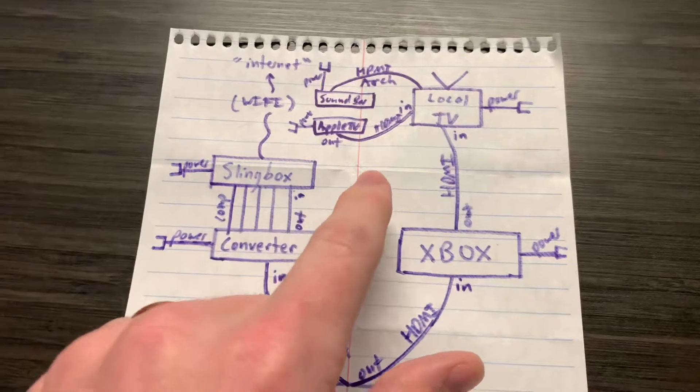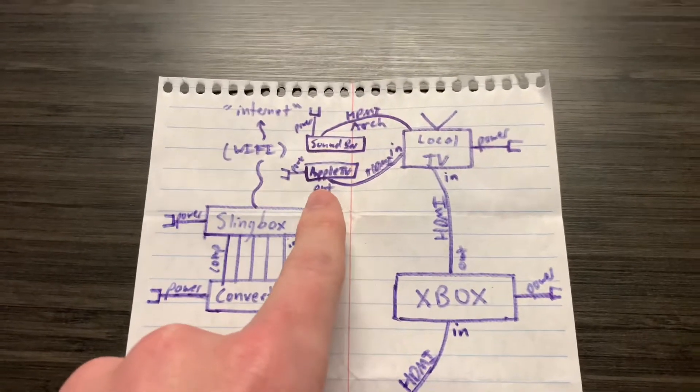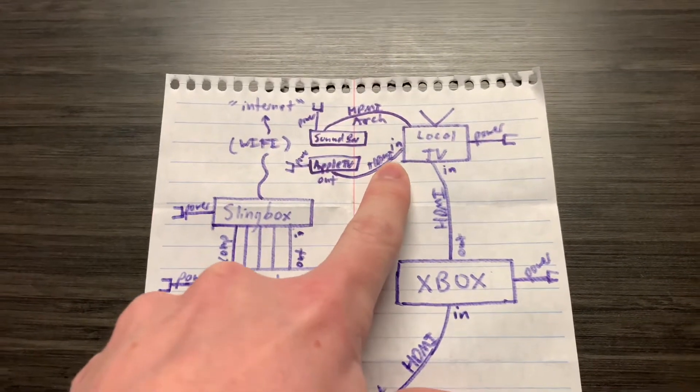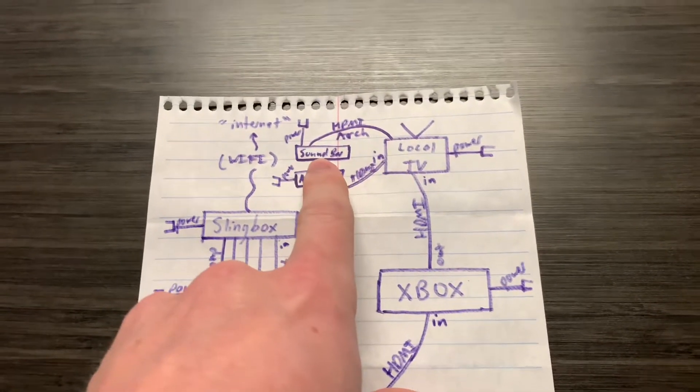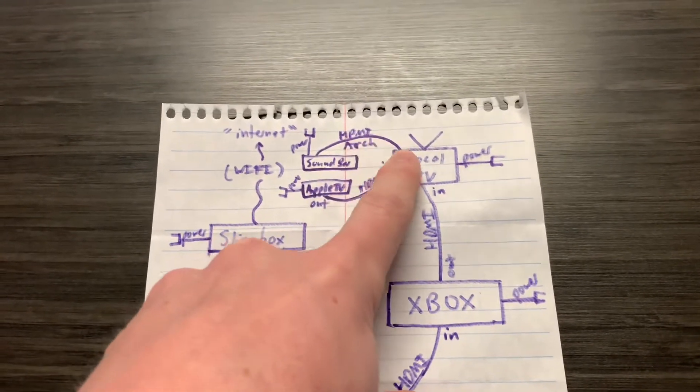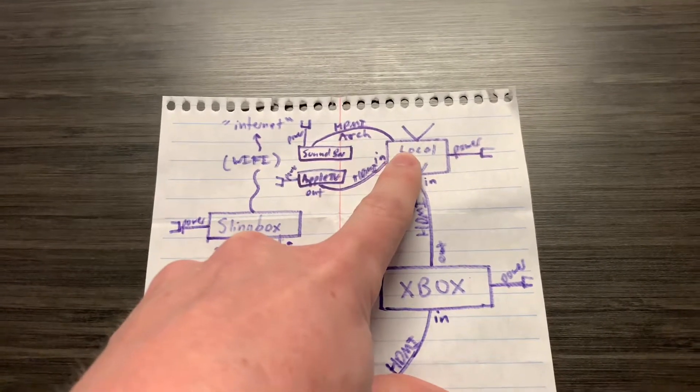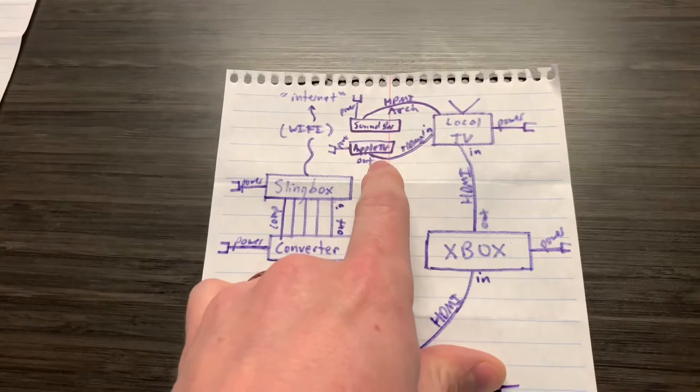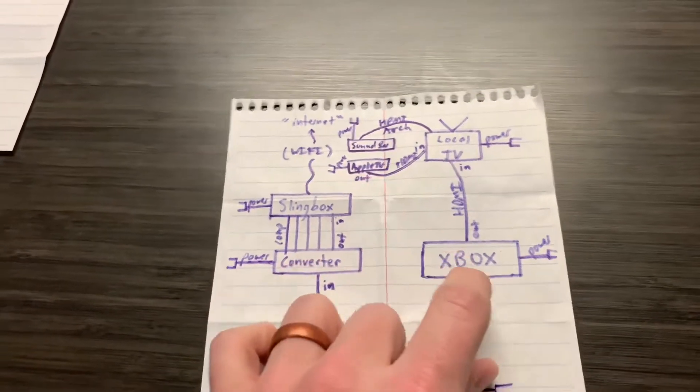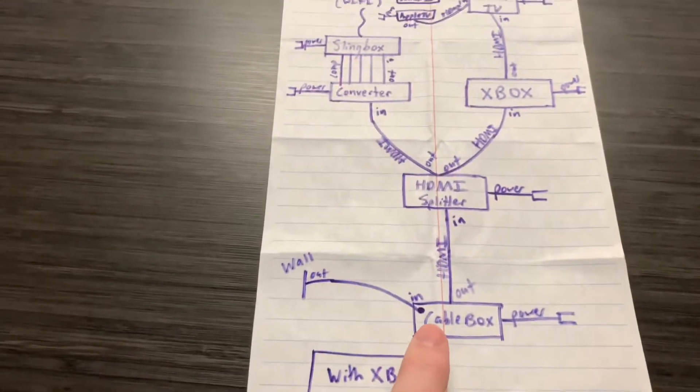Now what is really cool is that I just individually plugged in the Apple 4K TV into the local TV. And then what I have here is I have the soundbar, which is HDMI ARC into the TV. And what the HDMI ARC does is it does the audio for the Apple TV, the Xbox and the cable box.